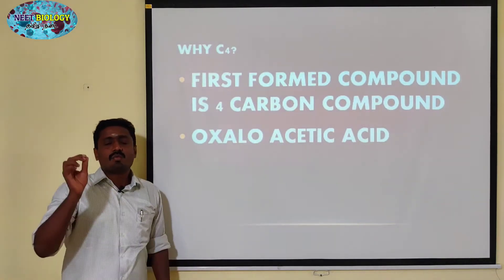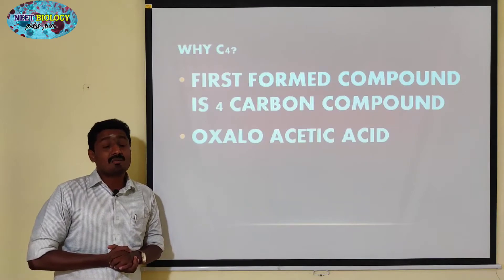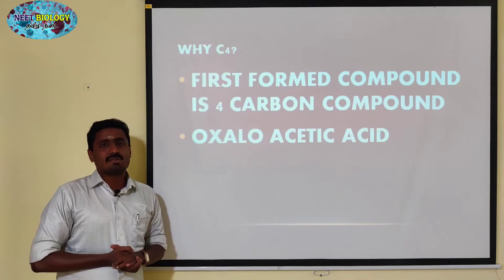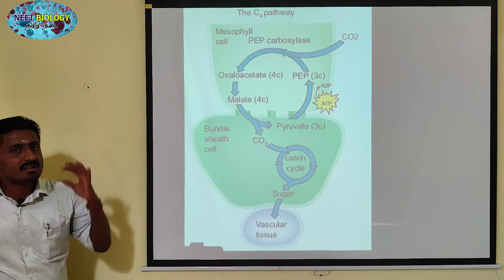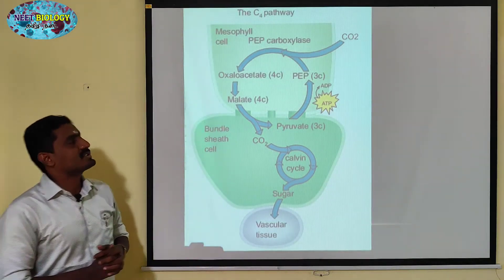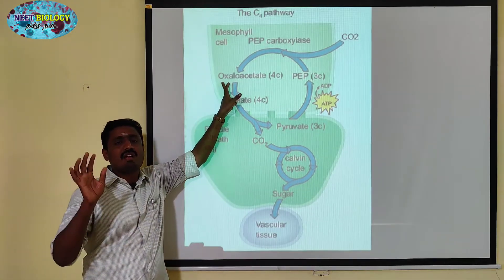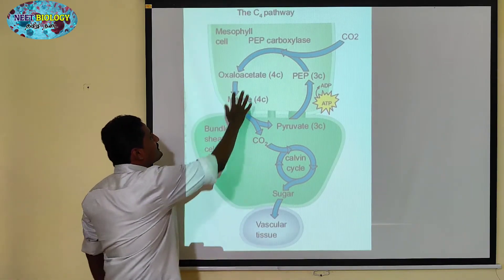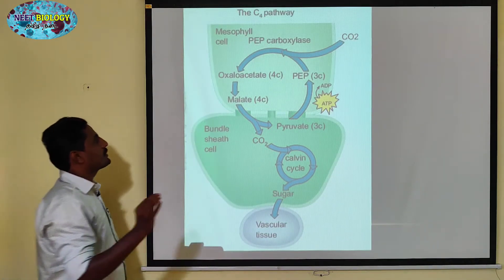Oxaloacetic acid has two COOH groups — that is, carboxyl groups. This is called the dicarboxylation process, and this pathway is therefore called the dicarboxylic acid pathway.